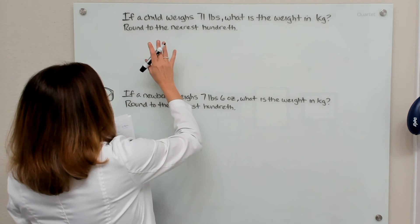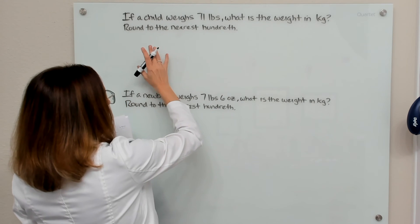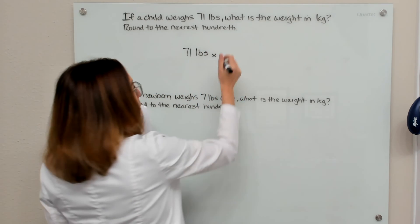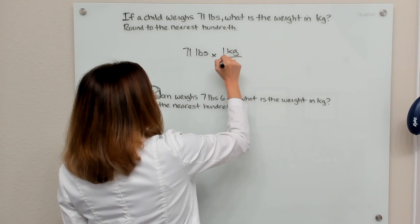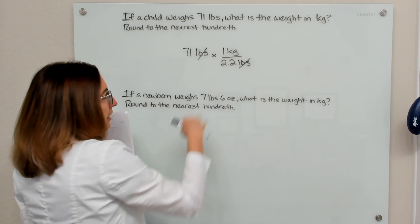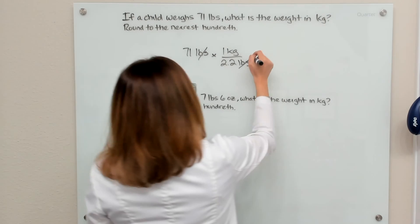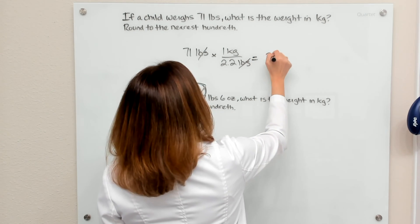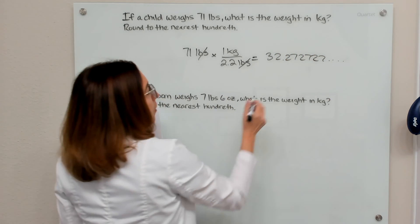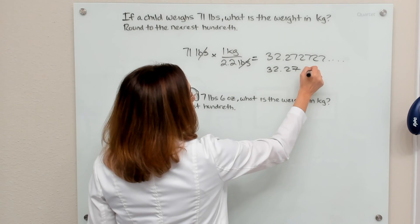For the first example, if we have a child that weighs 71 pounds, what is their weight in kilograms rounded to the nearest hundredth? We would take 71 pounds and divide by 2.2. Or if you prefer dimensional analysis, you multiply by the conversion factor — there are 2.2 pounds in a kilogram. If you calculate this out, you end up with 32.272727 repeating, so rounded to the nearest hundredth that is 32.27 kilograms.